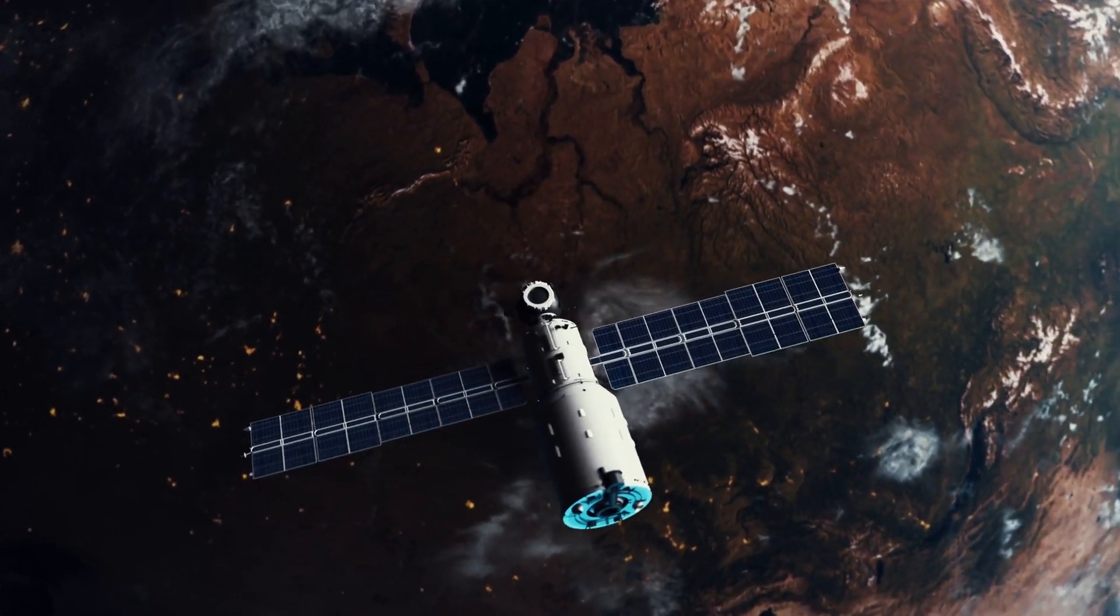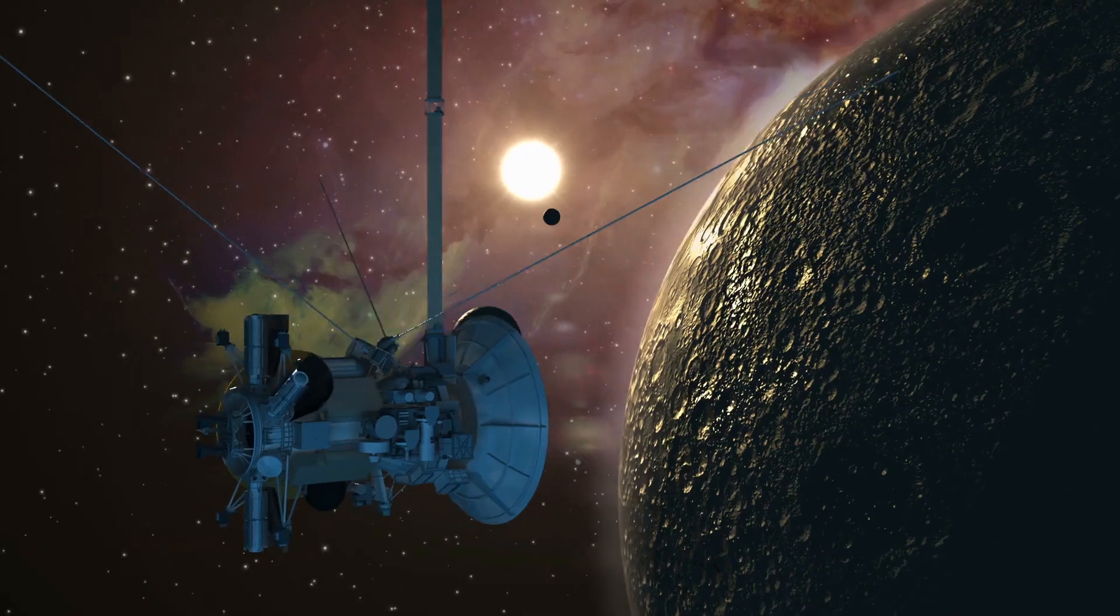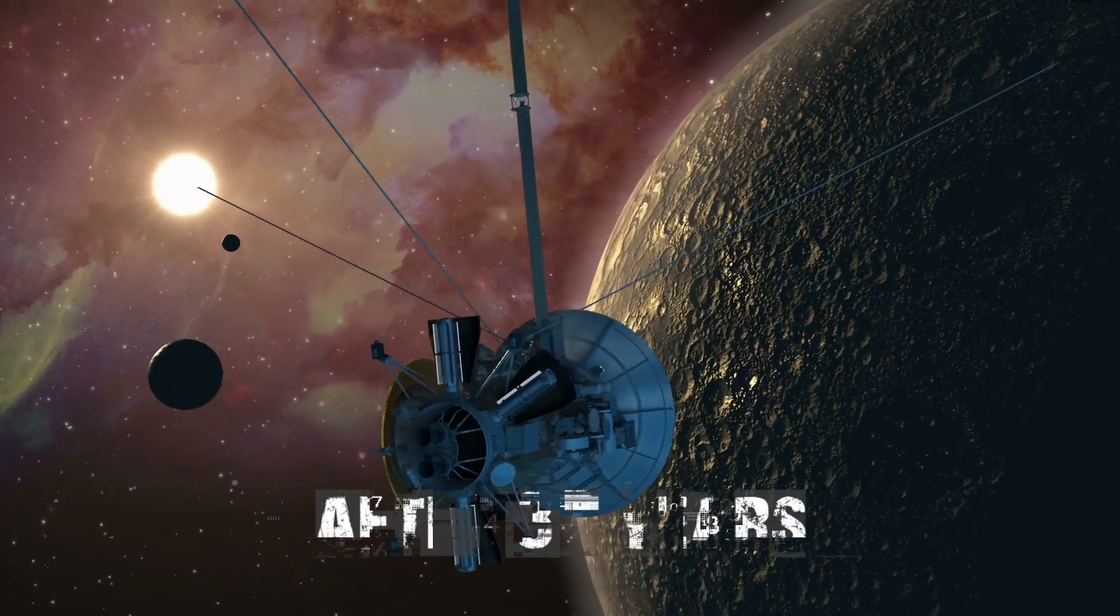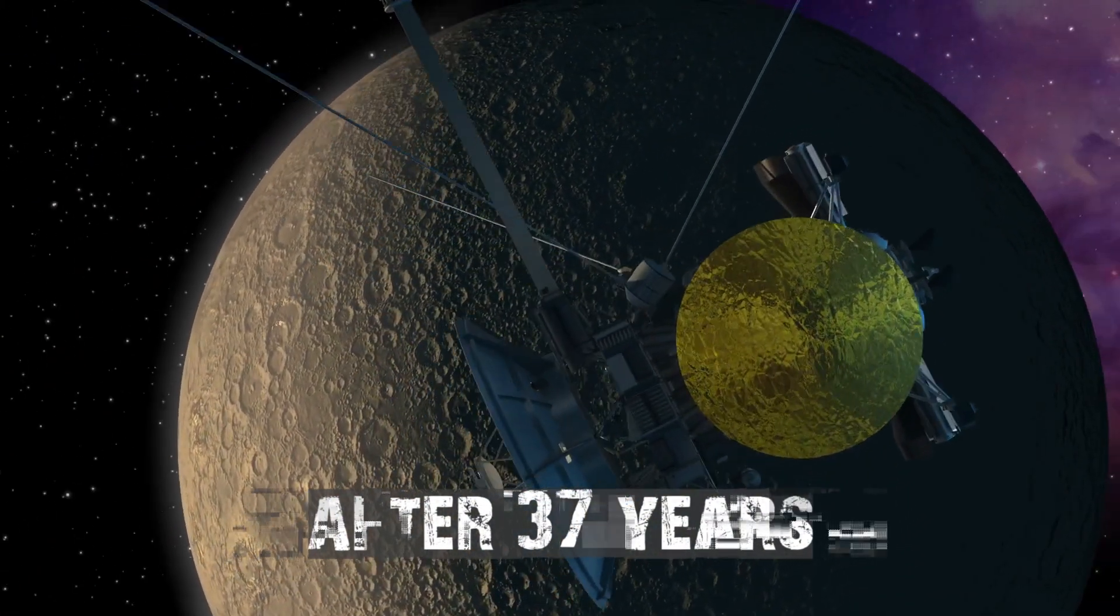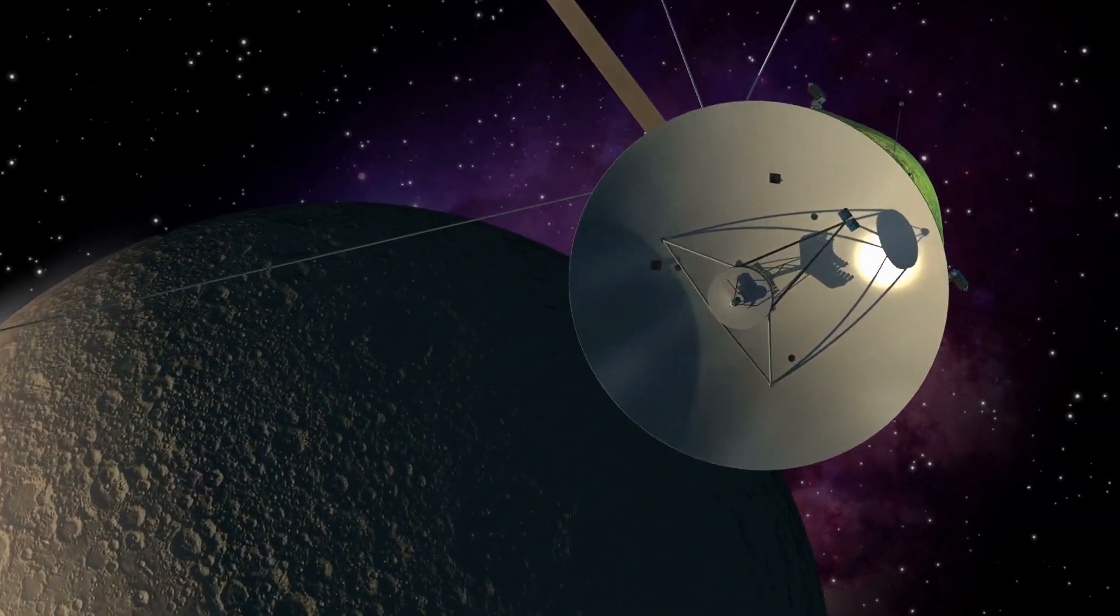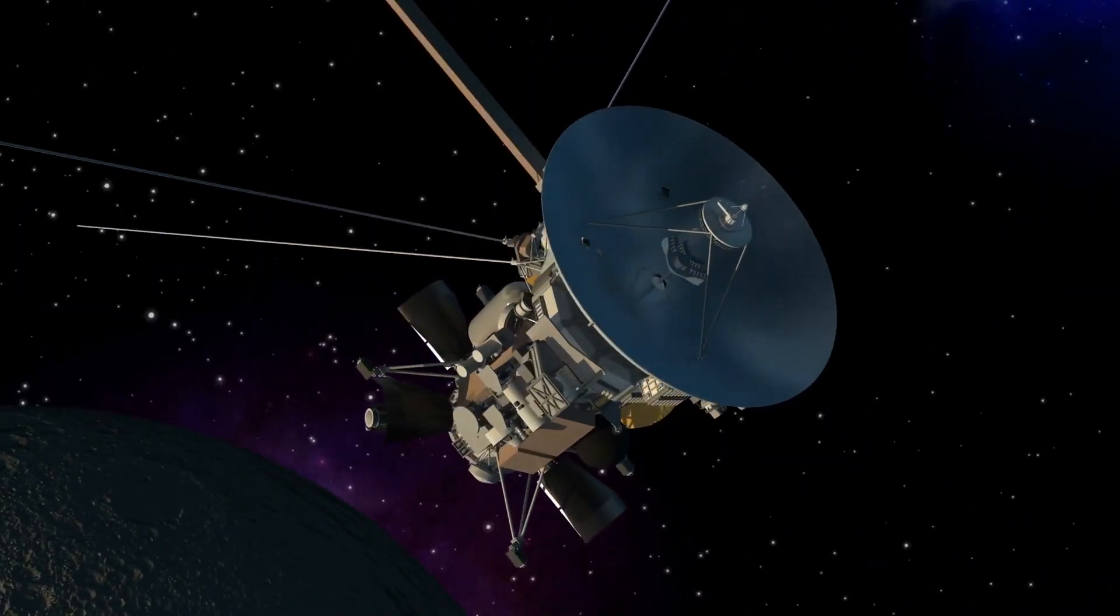Even if they only function in spurts, they will end. Backup thrusters are an intriguing feature. After 37 years, the main thrusters failed, so NASA went to backup engines that hadn't fired in over 40 years. They worked brilliantly.